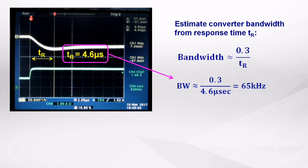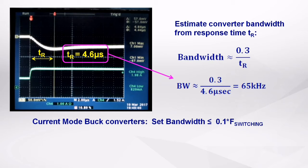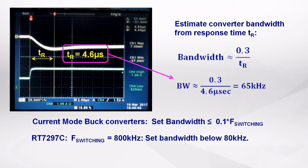As we normally set the control bandwidth of a current mode buck converter below 10% of the switching frequency, the 65 kHz measured bandwidth is a reasonable value for an 800 kHz converter.